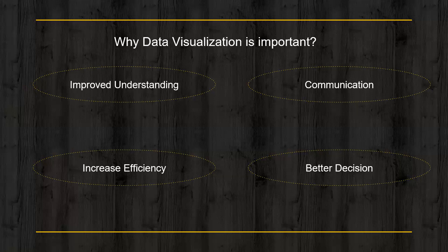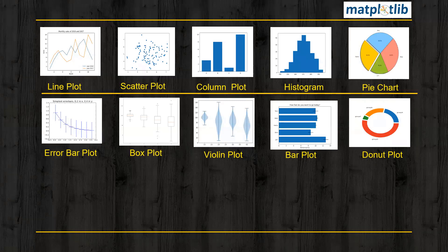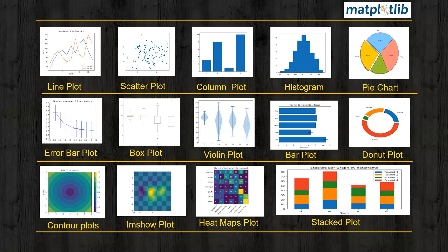Now we will discuss the Matplotlib library. Matplotlib is a plotting library for the Python programming language. It is used for 2D and 3D plotting with graphs, and it provides an interface to create a wide range of static, animated, and interactive visualizations in Python. This library allows you to create line plots, scatter plots, column plots, histograms, pie charts, error bar plots, box plots, violin plots, bar plots, and donut plots, among many other chart types.